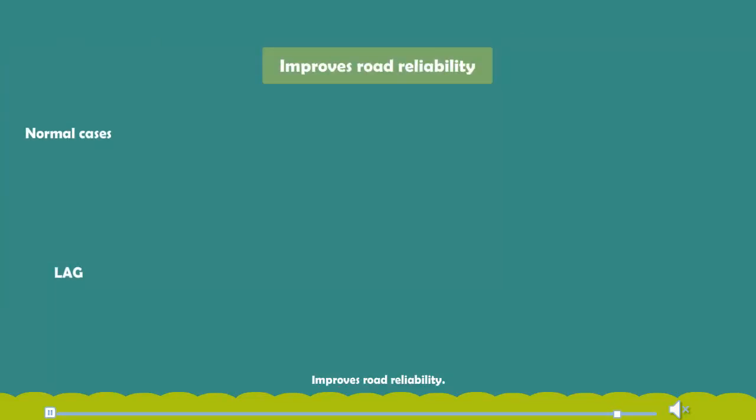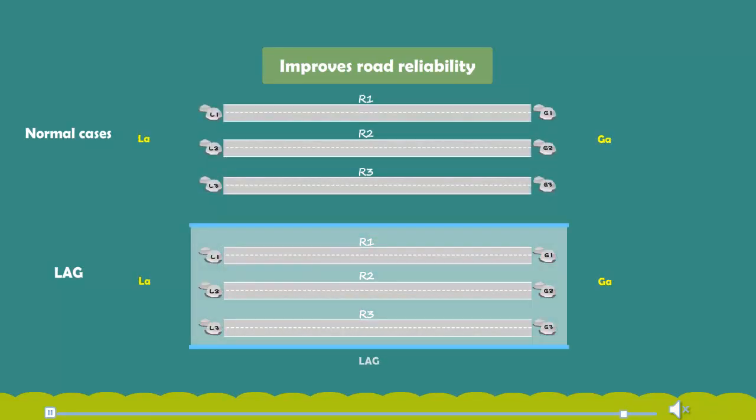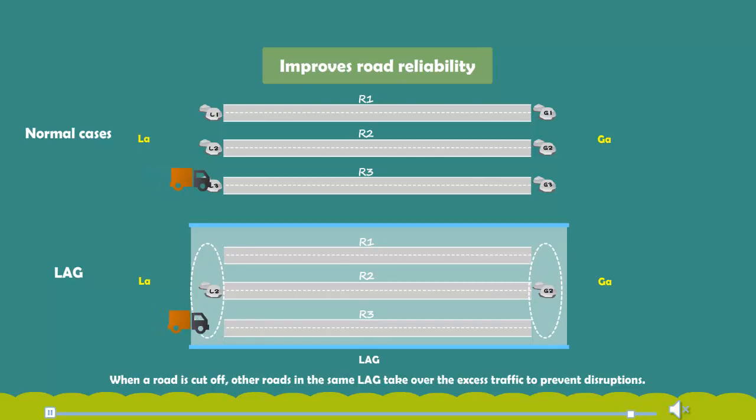Improves road reliability. When a road is cut off, other roads in the same LAG take over the excess traffic to prevent disruptions.